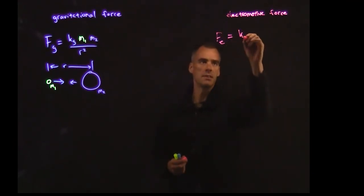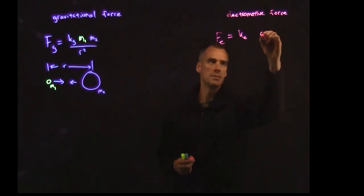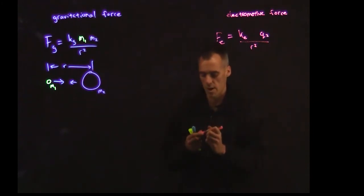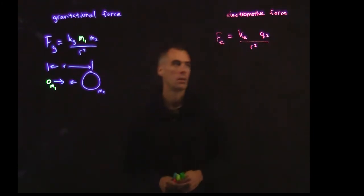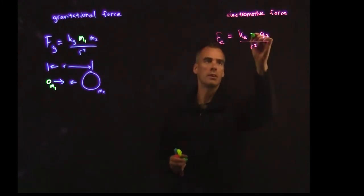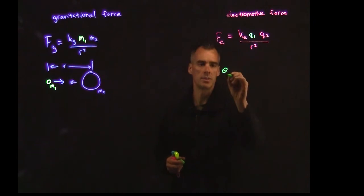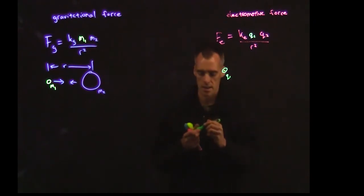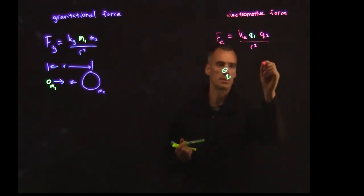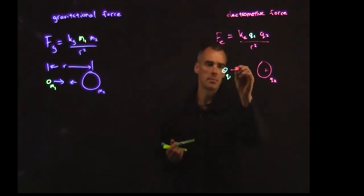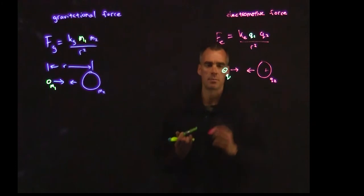We've got some constant k sub e times some charge, in this case q sub 2, divided by the radius between them squared. I'm going to do q1 in a different color here, where q1 is this small negative charge out here, and let's say q2 is this bigger charge over here, positive, and there's going to be some attraction between them because they're positive and negative.